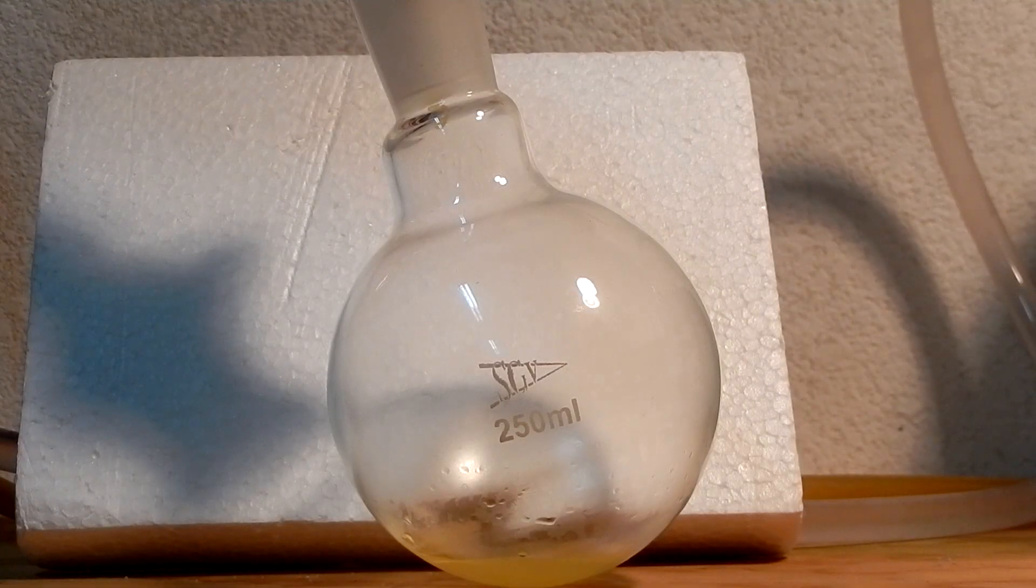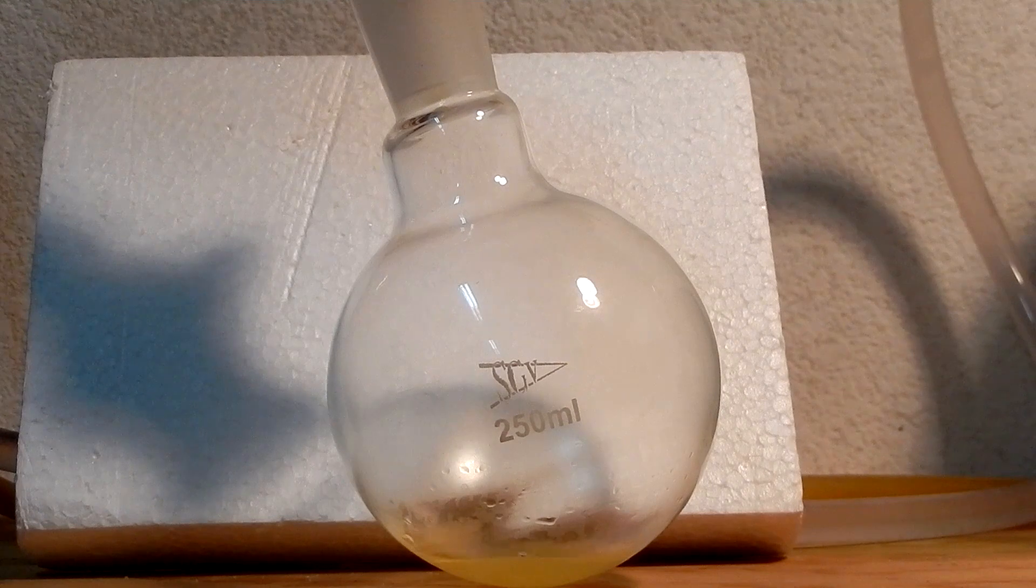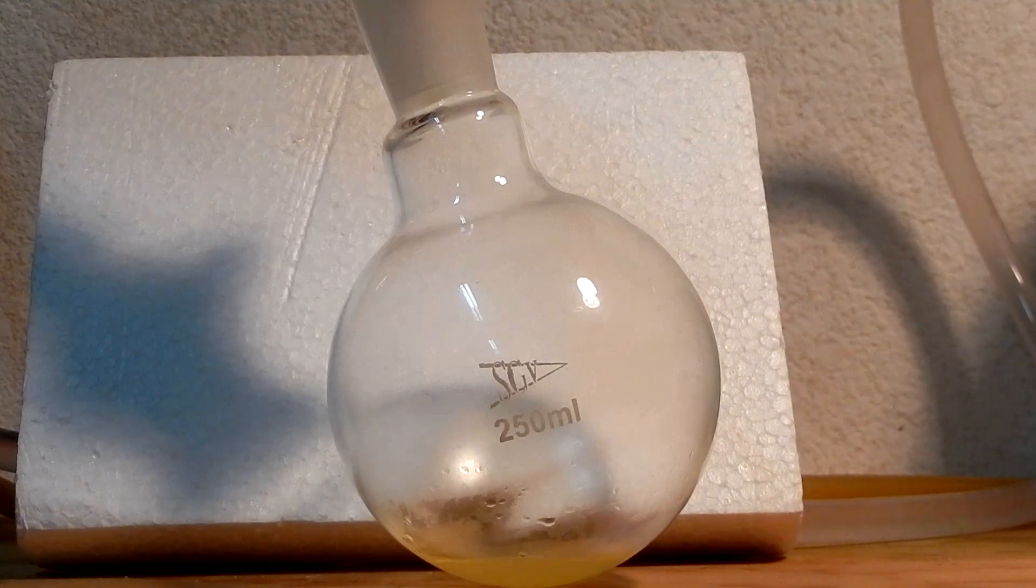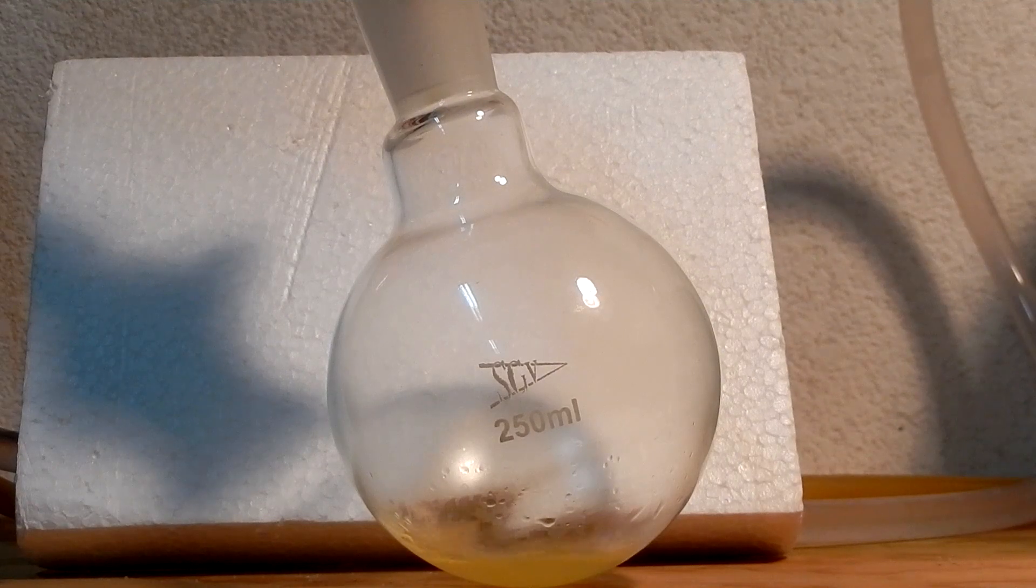As the distillation commences, drops of yellow oil will appear in the distillate. This oil is the crude chlorobenzene. Continue the distillation until no more oily drops are present in the distillate.